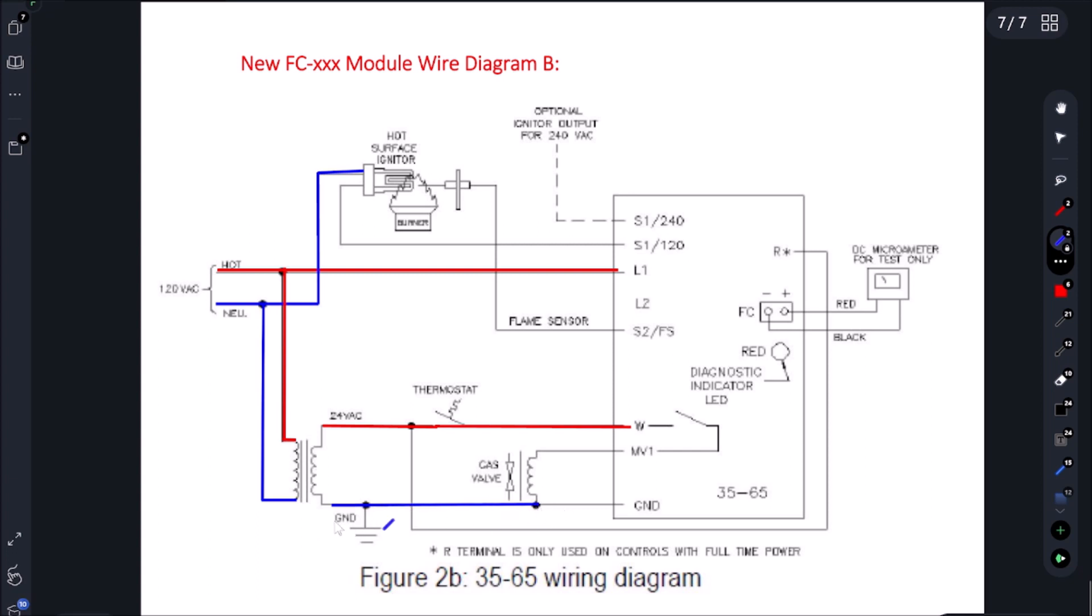In this case, it's our 24 volt side which becomes our ground, and then it's also going to send 24 volt ground to this module. As soon as we get power on W, this L1 is going to loop around here. We have an option of 120 volts and 240, we're dealing with 120, and it'll come directly to our hot surface igniter.